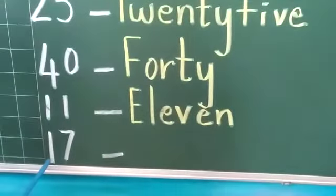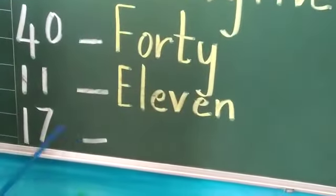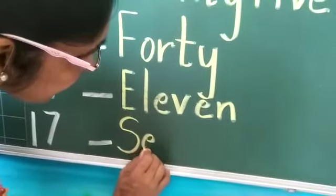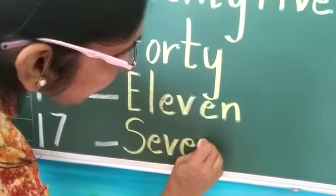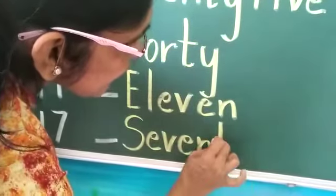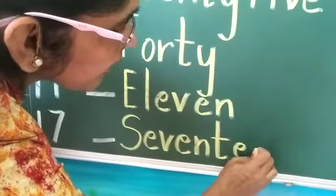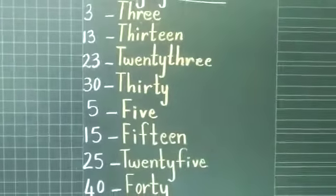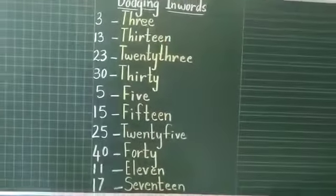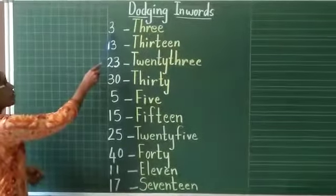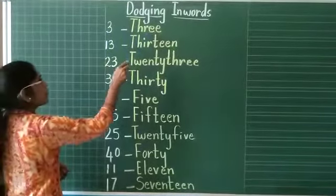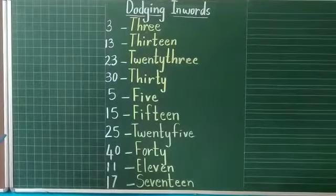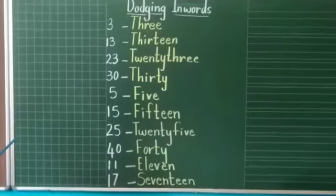And the last one is 17. You are going to write the spelling of 17 here. S, E, V, E, N, T, E, E, N — 17. I think you all understood how to write dodging in words. You have to identify the numbers first and then go on writing the spelling for them. You have to practice all this at home. Thank you, children. Bye.